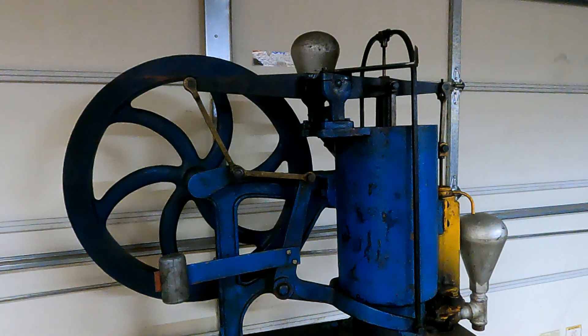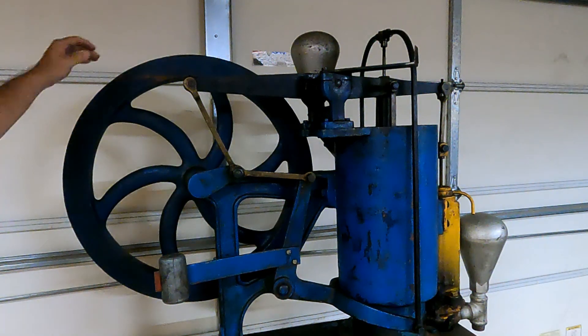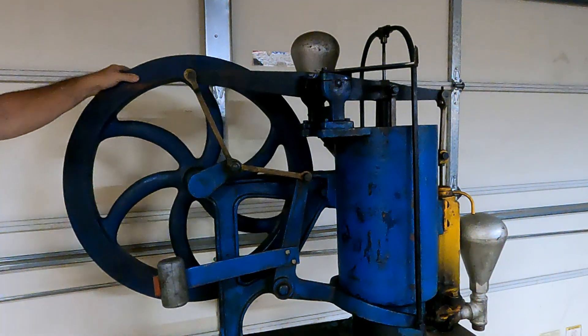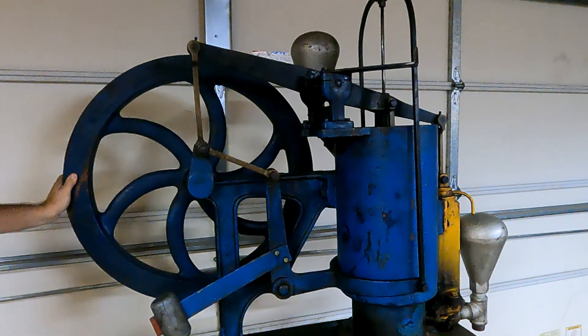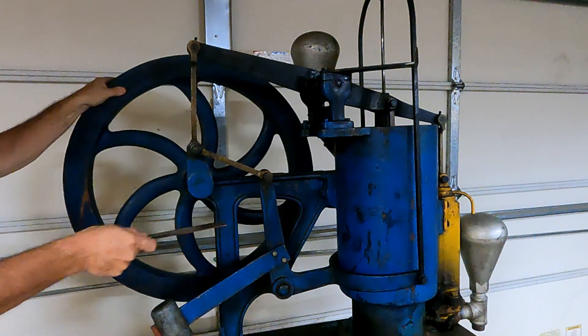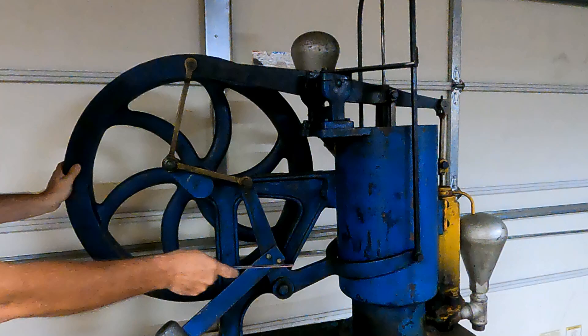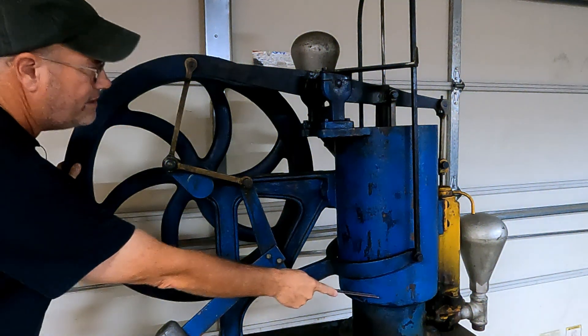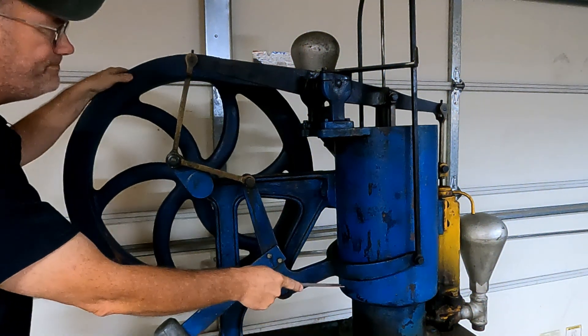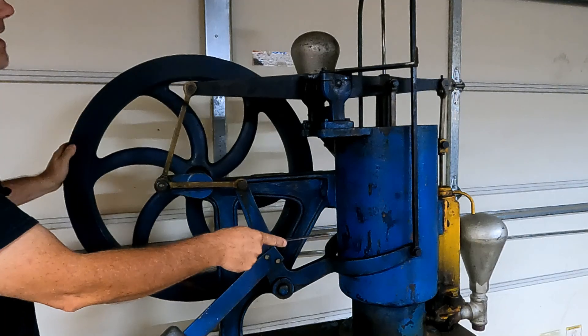I'll roll it over and you can see how complex this linkage is. This rod that's going up here is the displacer, so it's moving the air to the bottom of the cylinder, which would be the hot side, so it's moving the air down.